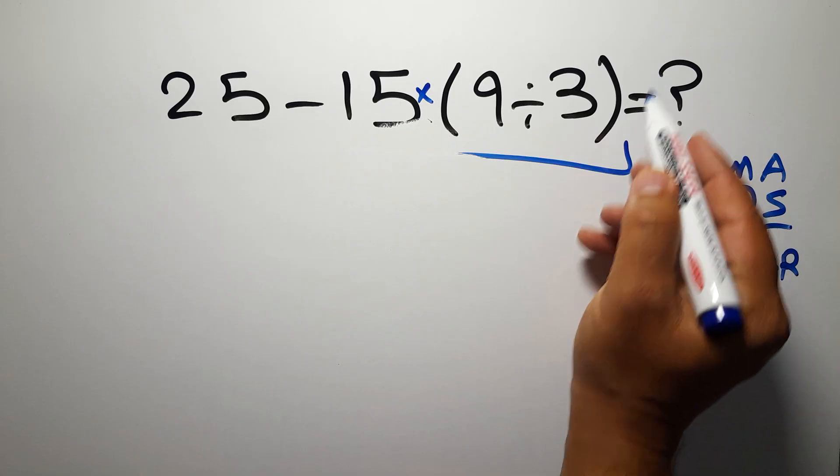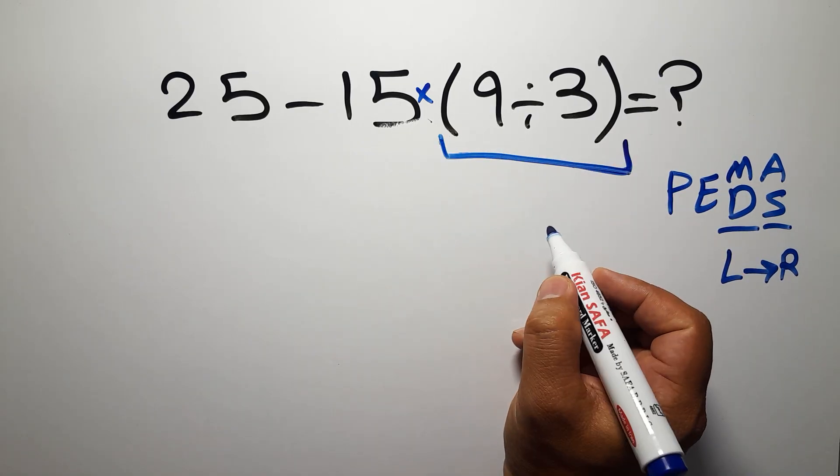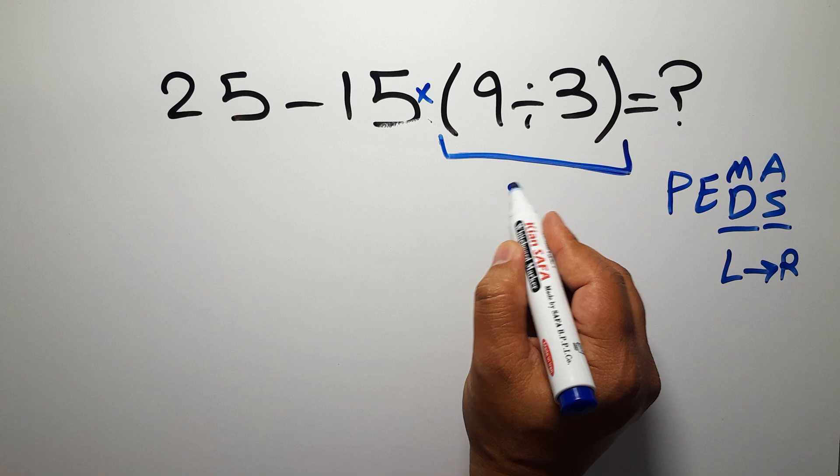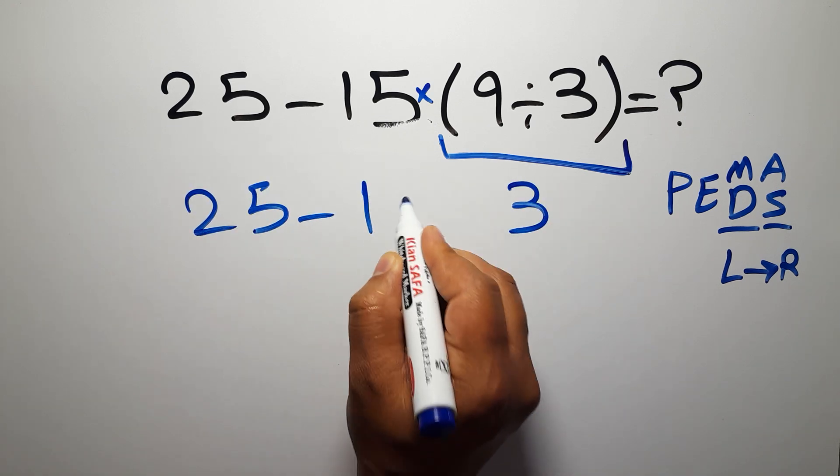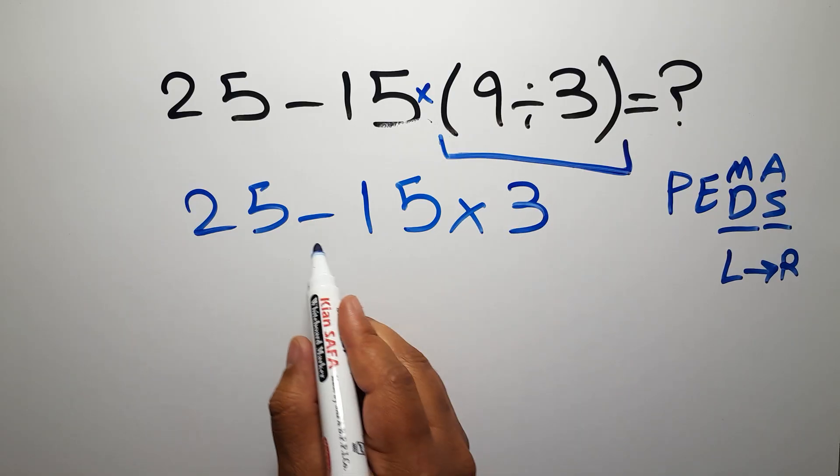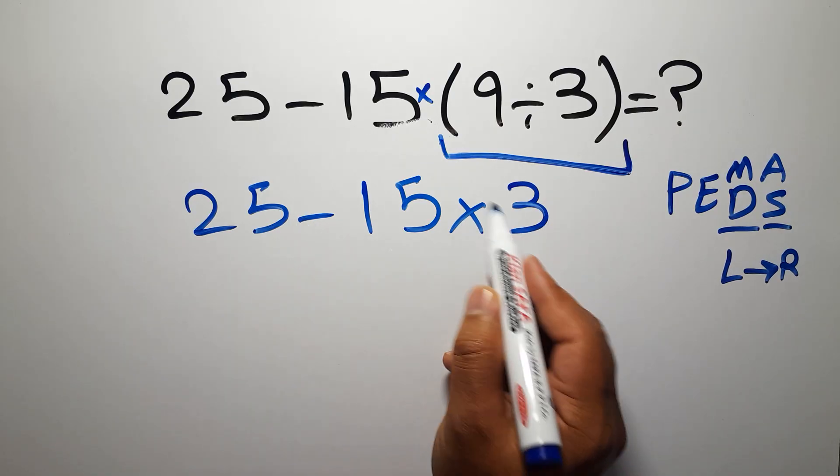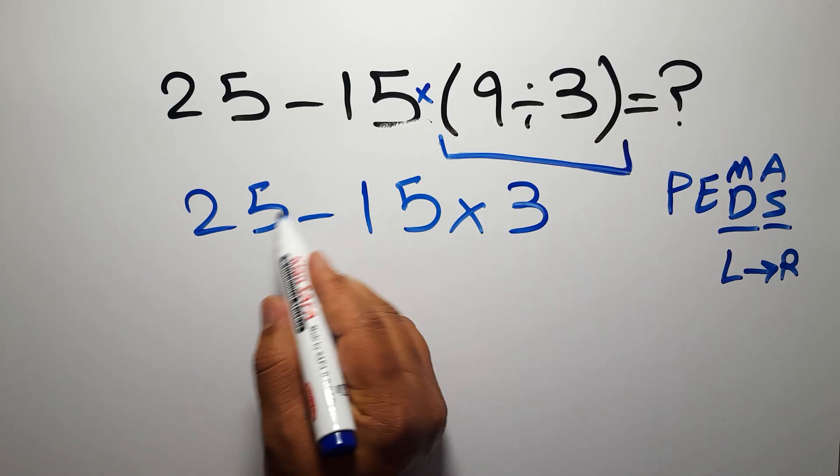So first this parentheses. Inside this parentheses we have 9 divided by 3 which equals 3, so we have 25 minus 15 times 3. Now we have one subtraction and one multiplication. Multiplication has higher priority than subtraction.